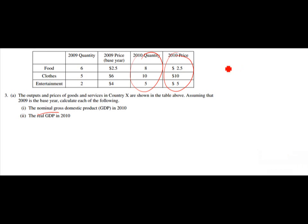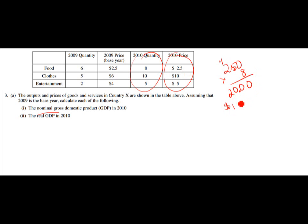We're going to calculate: 250 times 8 is 2,000... actually, 2 times 8 is 16 plus 4, so that gives $20. Then 10 times 10 is $100. And 5 times 5 is $25. Adding those together, the nominal GDP is $145.